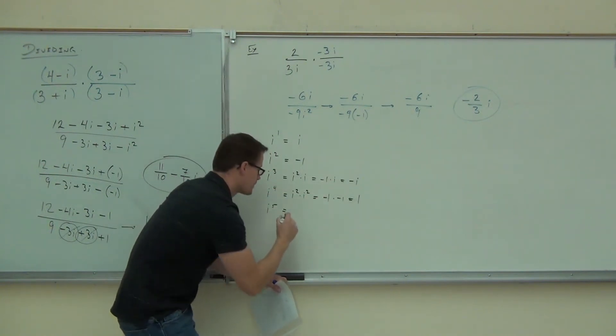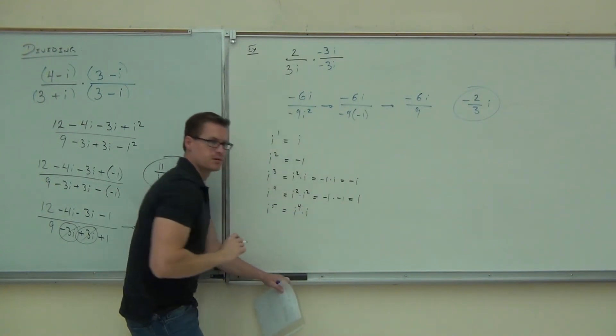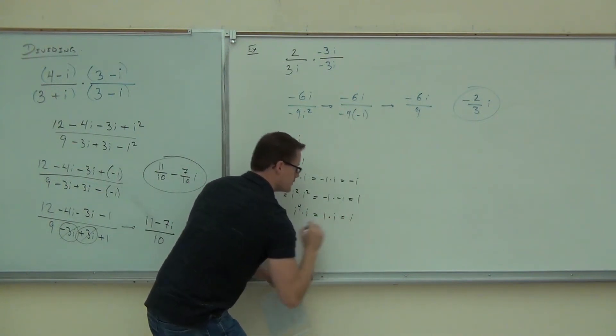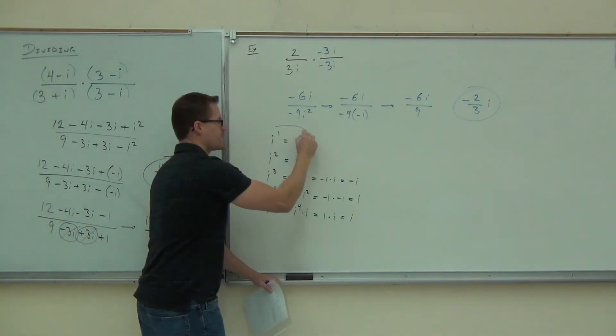I want you to check this out, okay? This is i to the fourth times i. Do you follow that? i to the fourth was one. i is i. This is i. One times i is i.